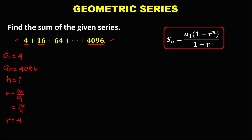Since in this given there is no number of terms, and from this formula we need the number of terms, then we need to solve first the number of terms before finding the sum of this geometric series. Using the geometric sequence formula to find the number of terms: a sub n equals a sub 1 times r to the power n minus 1. Substitute now the values to solve for n.